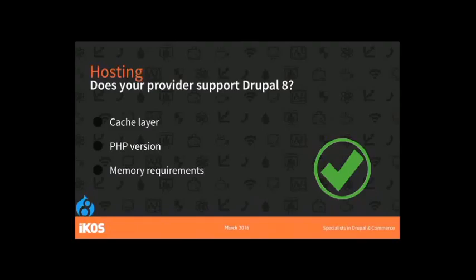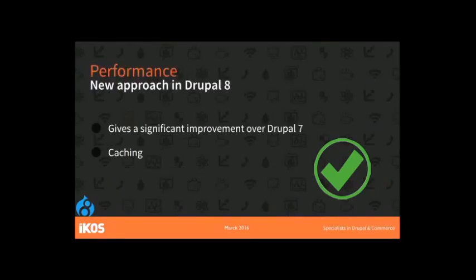If you're not on Acquia, Pantheon, Platform, or any of these well-known hosting layers, does your hosting provider support what you need — the memory, the PHP version? I haven't got much evidence, but if you're trying to put this on a shared hosting platform, is it going to work for you compared to Drupal 7? On performance: performance is a massive step up. There was a session on BigPipe this morning. Cache tags and much more intelligent caching than we've ever had before is available in Drupal 8 — especially for caching authenticated traffic. High performance for logged-in traffic is something we really can't achieve in Drupal 7.